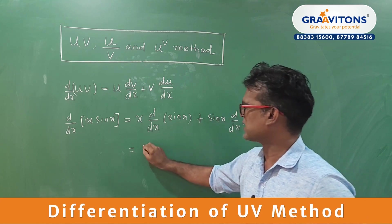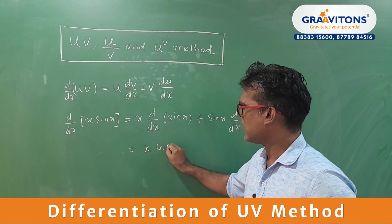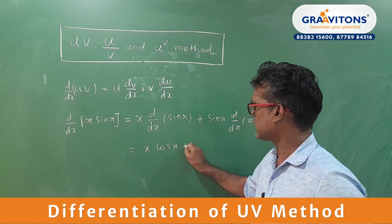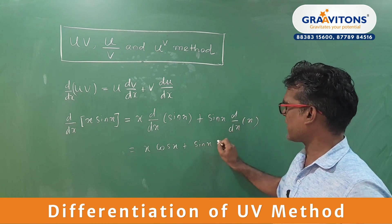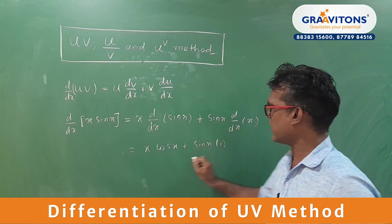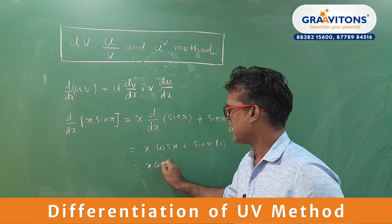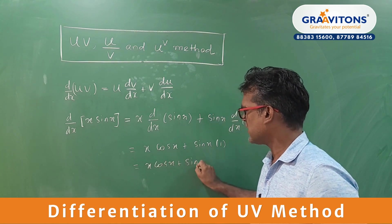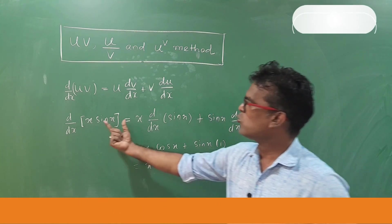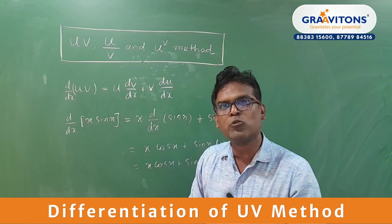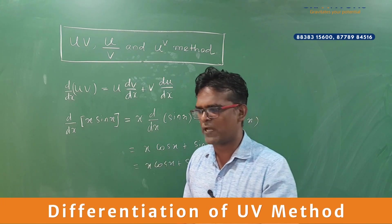Now do the differentiation. x into d by dx of sin x is cos x, plus sin x into d by dx of x is 1. So our final answer is x cos x plus sin x. So that is the UV method — two students coming to the teacher to clarify their doubt one at a time.